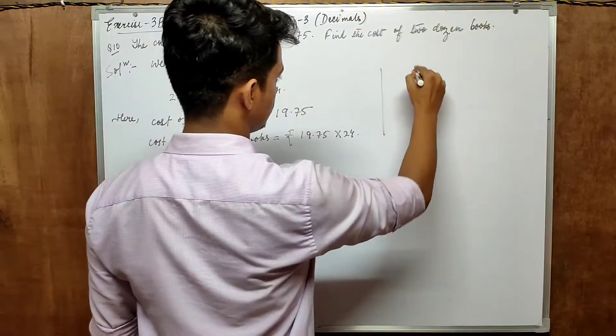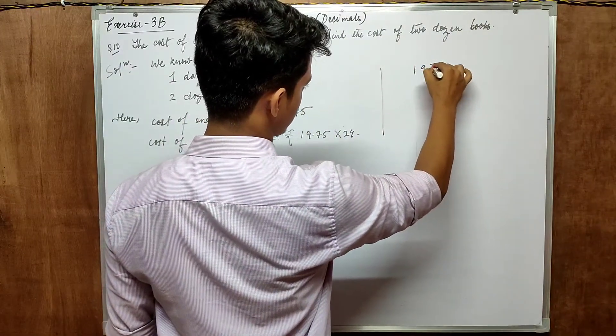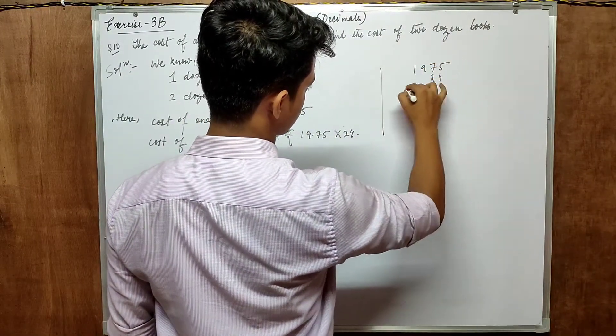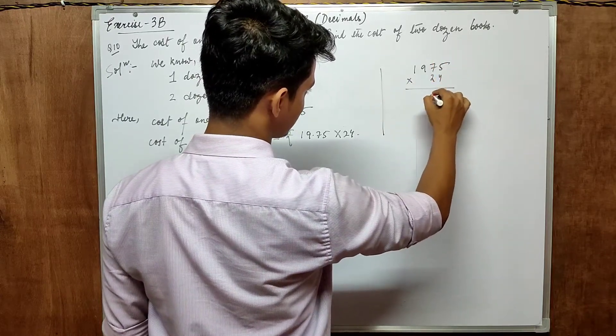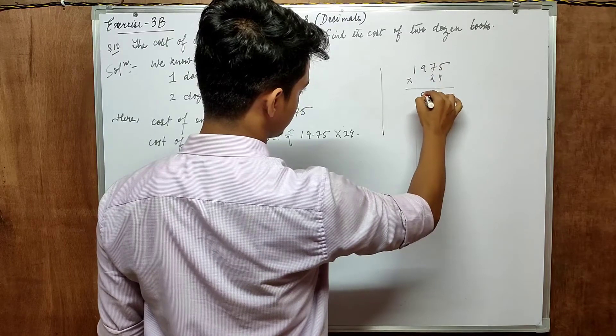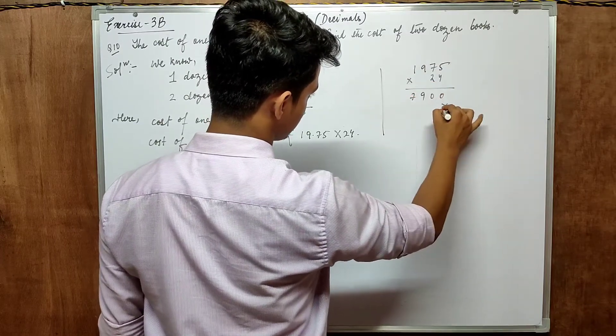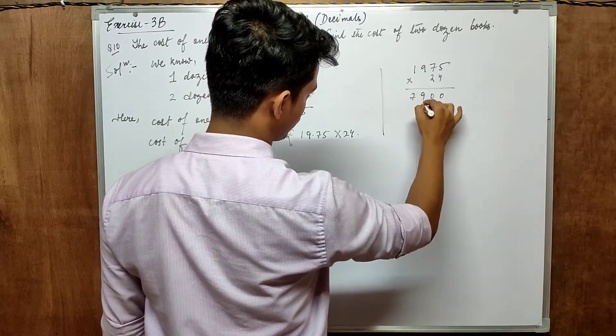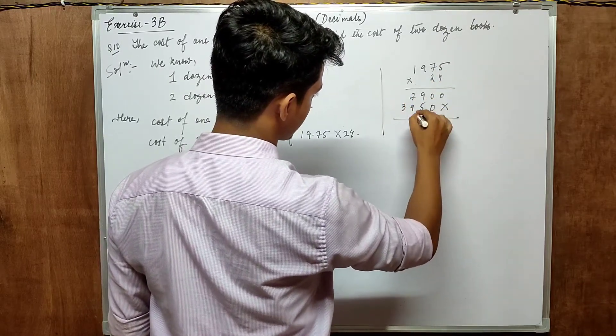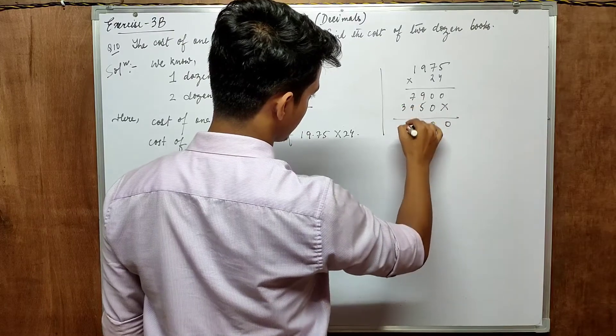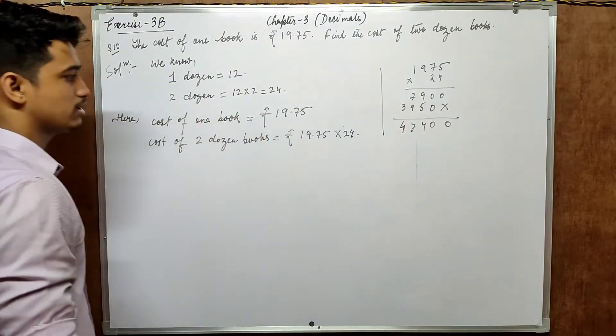So cost of two dozen books equal to rupees 19.75 into 24. Just multiply it. 1975 and then 24. 4 into 5, 20, 2 carry, 28, 30, 3 carry, 36, 39, 3 carry, 7. And then cross 10, 1, 15, 1, 19, 1, 3. So 0, 0, 14, 1 carry, 10, 17, 1 carry, 4. So 4, 7, 4, double 0.